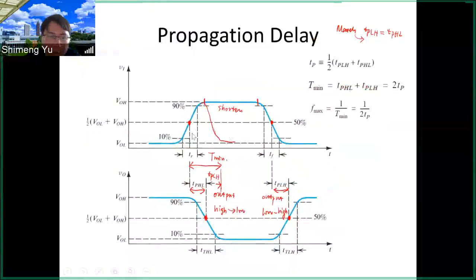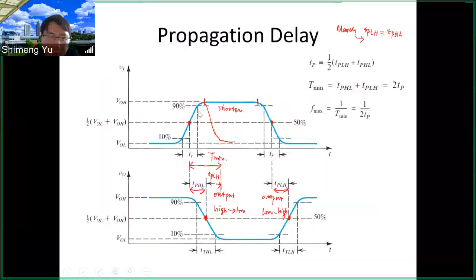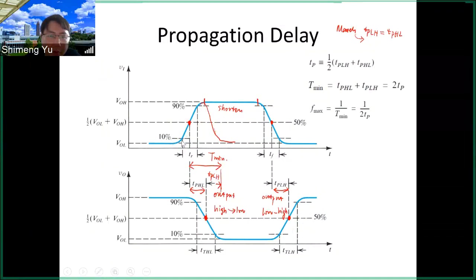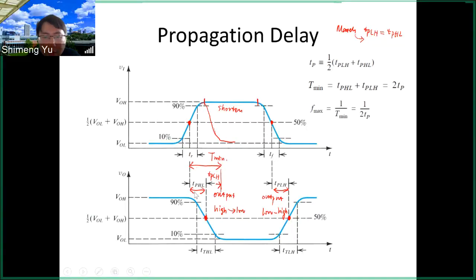A few more words: the rising edge can also be defined as going from 10% to 90% of the waveform, and the falling edge from 90% to 10%. We are not going to discuss the rising and falling edge further here. What is important in this class is tp_HL and tp_LH, which determine the clock frequency.